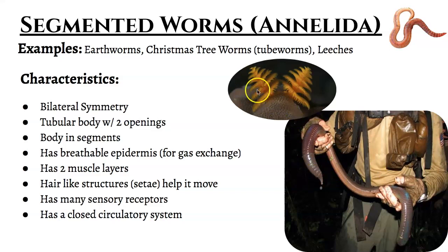These tube worms, like the Christmas tree worm, are actually just the filter feeding portions of the worm sticking up out of their little home. Tube worms that live in the ocean are segmented worms. And also the freshwater cousins: leeches. Leeches are the little segmented worms that people will sometimes get on their skin. They can be parasitic because they leech off you and suck your blood, using those blood meals to help with incubating their eggs. Nonetheless, leeches are a segmented worm.